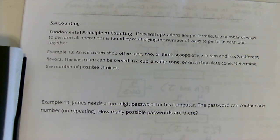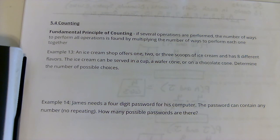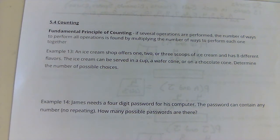In this section, we're going to be looking at the fundamental principle of counting. If several operations are performed, the number of ways to perform all operations is found by multiplying the number of ways to perform each one together. So it's pretty simple.